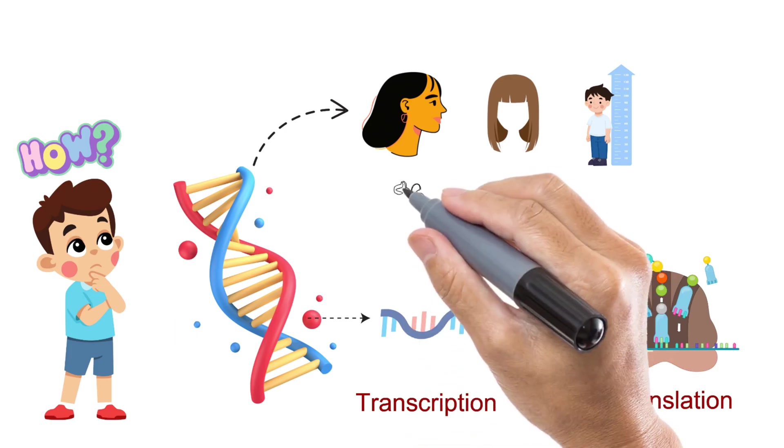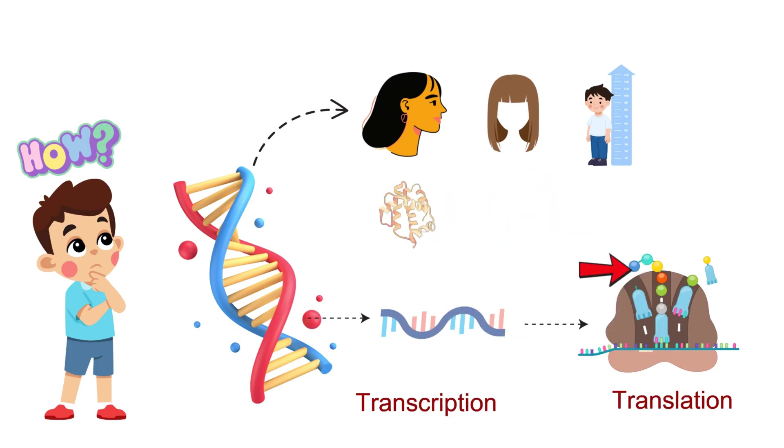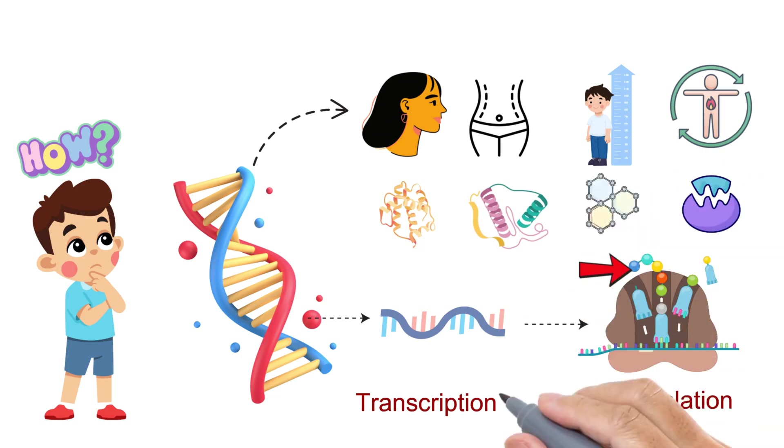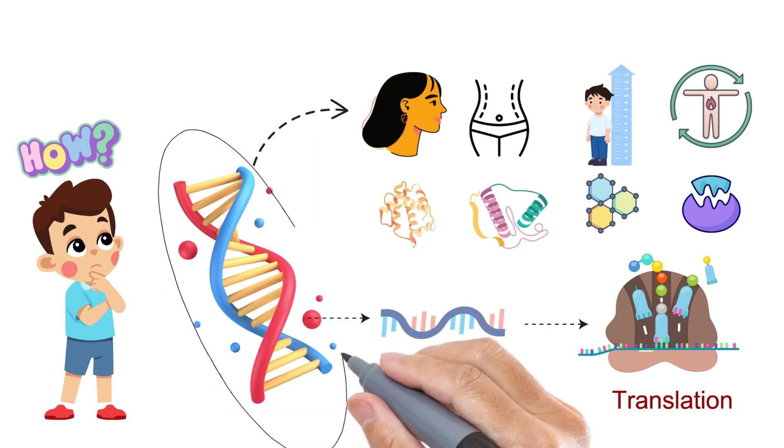For example, proteins that produce melanin control your skin and hair color. Structural proteins shape your body, enzymes power your metabolism, and hormones regulate your growth. So when we say DNA codes for life, what we really mean is DNA writes the instructions, transcription makes a copy...